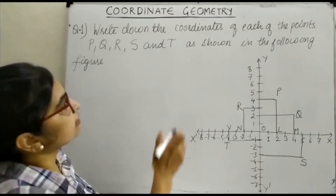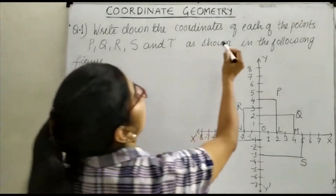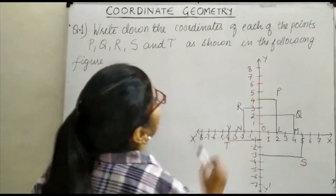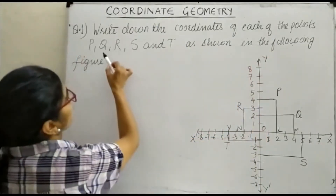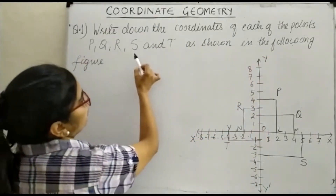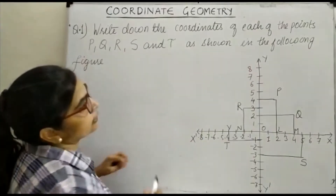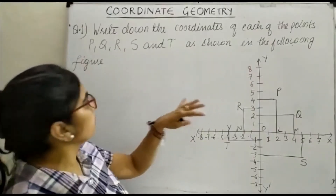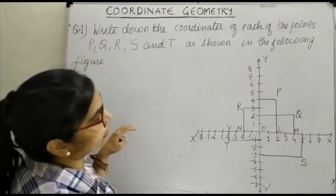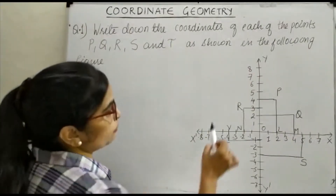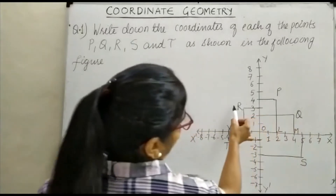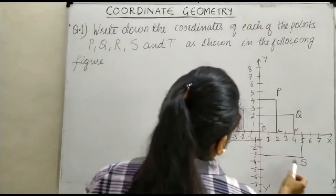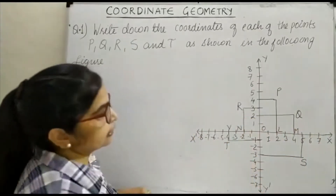Our question is: write down the coordinates of each of the points P, Q, R, S and T as shown in the following figure. You can see the points P, Q, R, S and T.